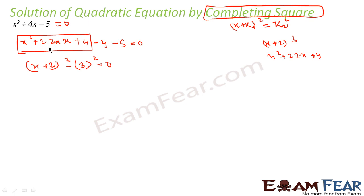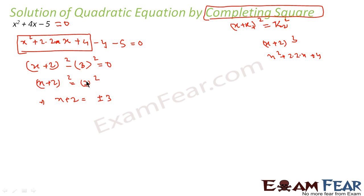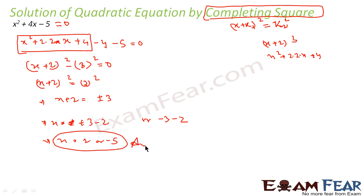I added and subtracted 4 with no harm. Taking the 4 with x² + 4x gives (x + 2)², and the remaining constant is 3². So (x + 2)² = 3². Removing the square root: x + 2 = ±3, because even a negative number squared gives 9. So x = 3 - 2 = 1, or x = -3 - 2 = -5. That is the answer.